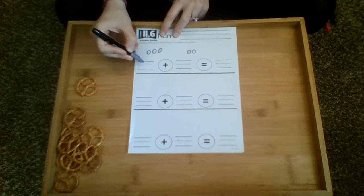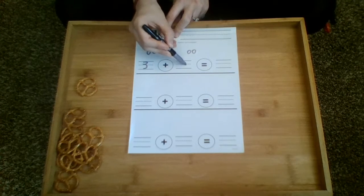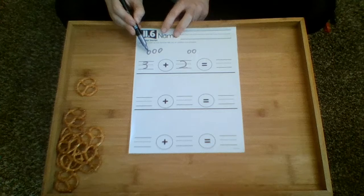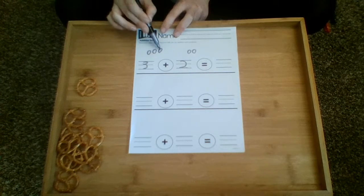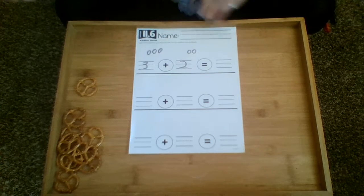How many soccer balls do they have all together? Well he has three soccer balls and she has two soccer balls and I count them together. One, two, three, four, and five.